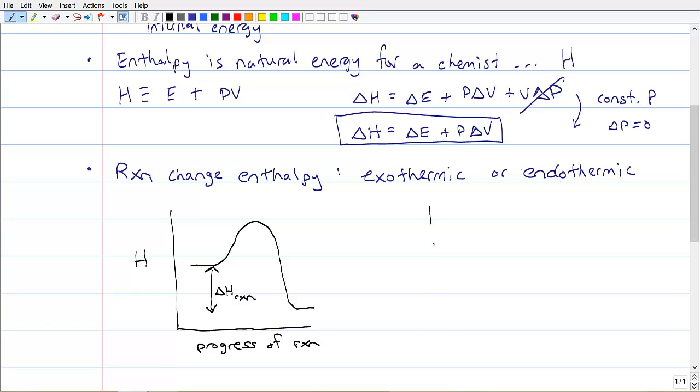We can also draw one of these for an endothermic process. This is also going to be H. And once again, this will be progress of reaction. And just to remind you, progress of reaction means I'm going from my reactants to my products. The change in energy here, right there, there's our delta H of reaction. So these are just some reminders, things you should remember.